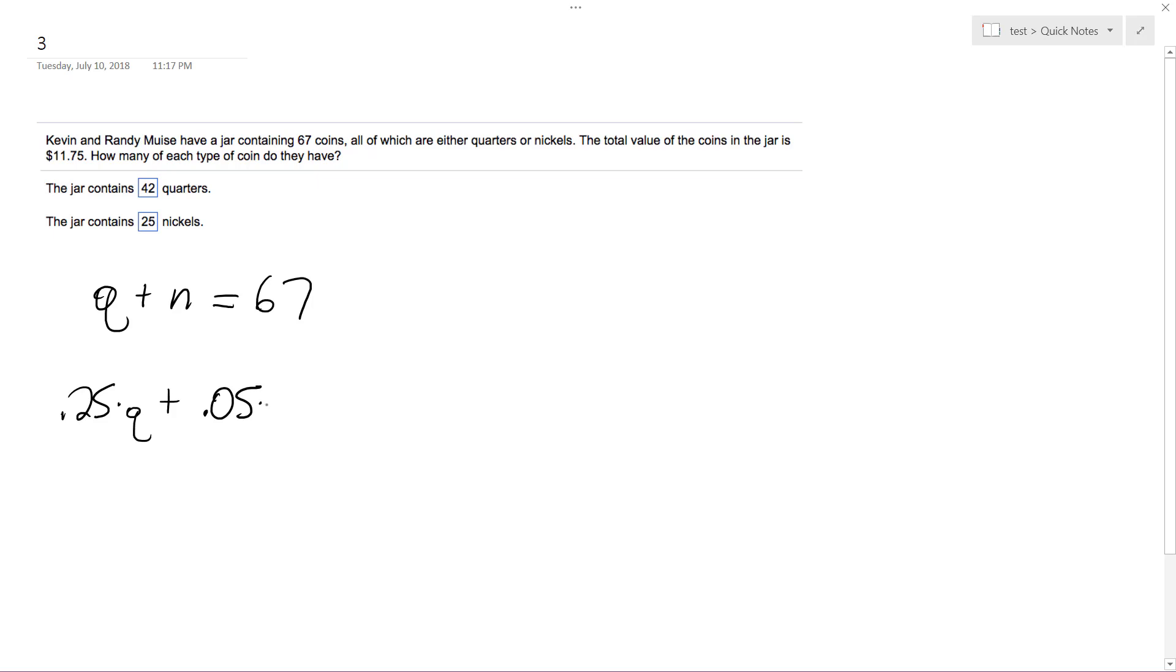0.05 times N equals $11.75. So all we have to do is substitution, and to do that we're going to make it so N is equal to 67 minus Q. So we'll have 0.25Q plus, or here's our substitution.